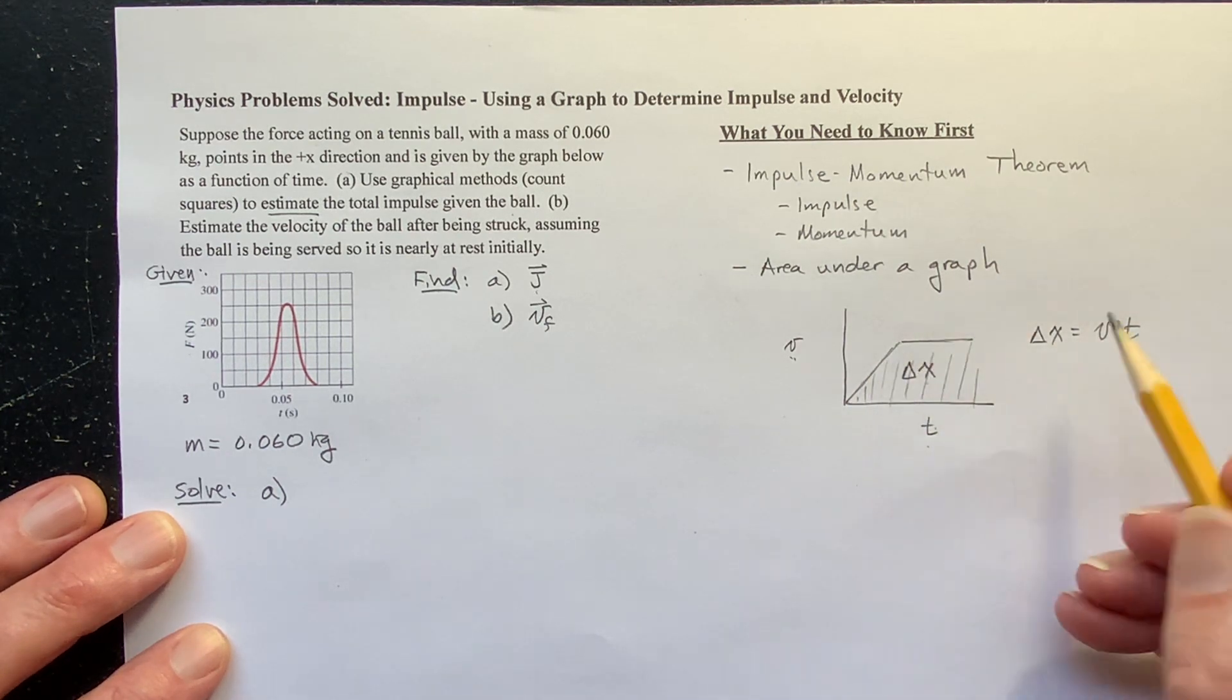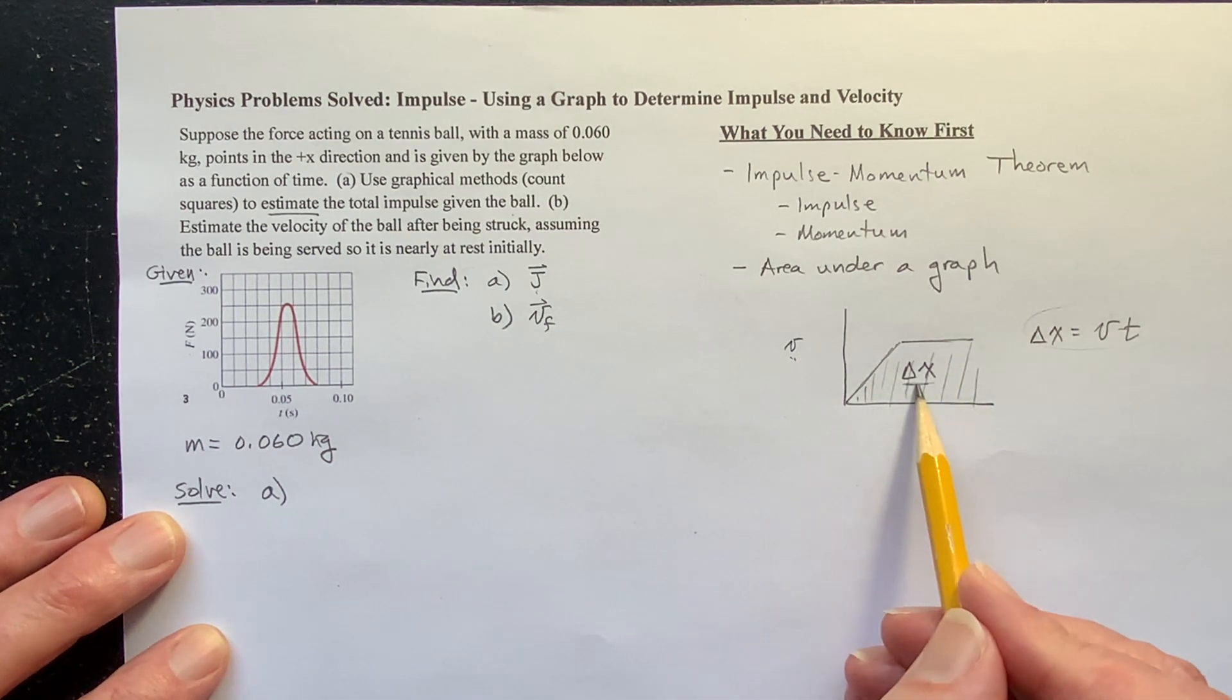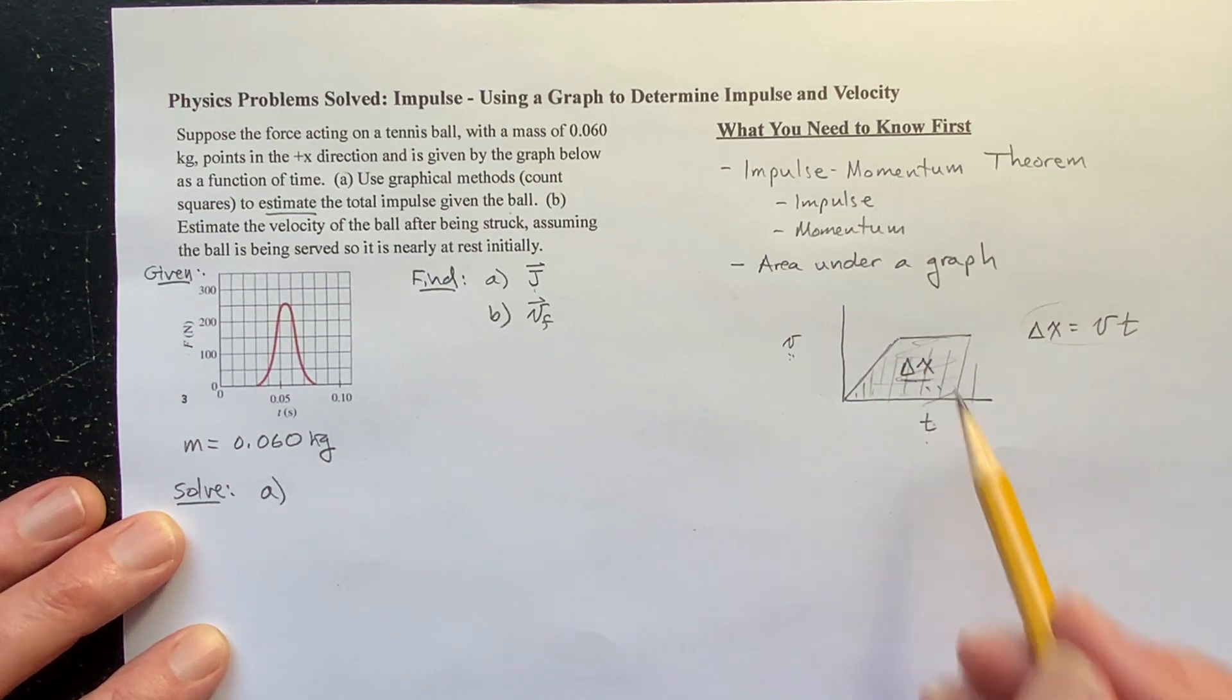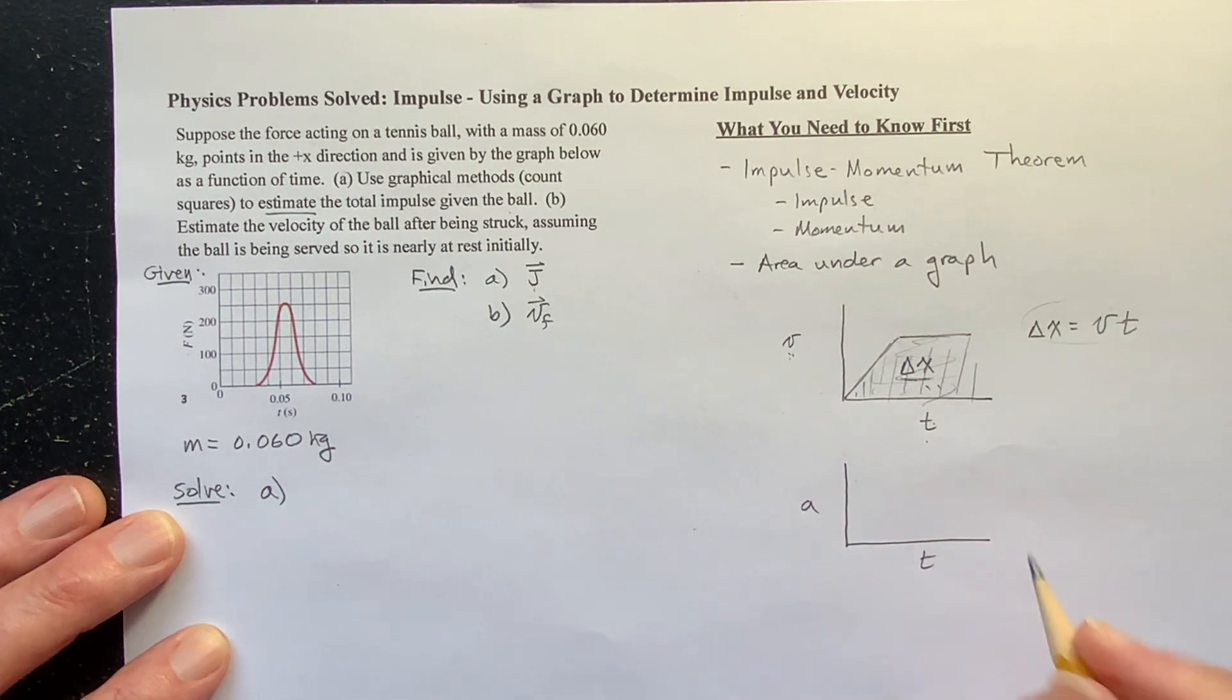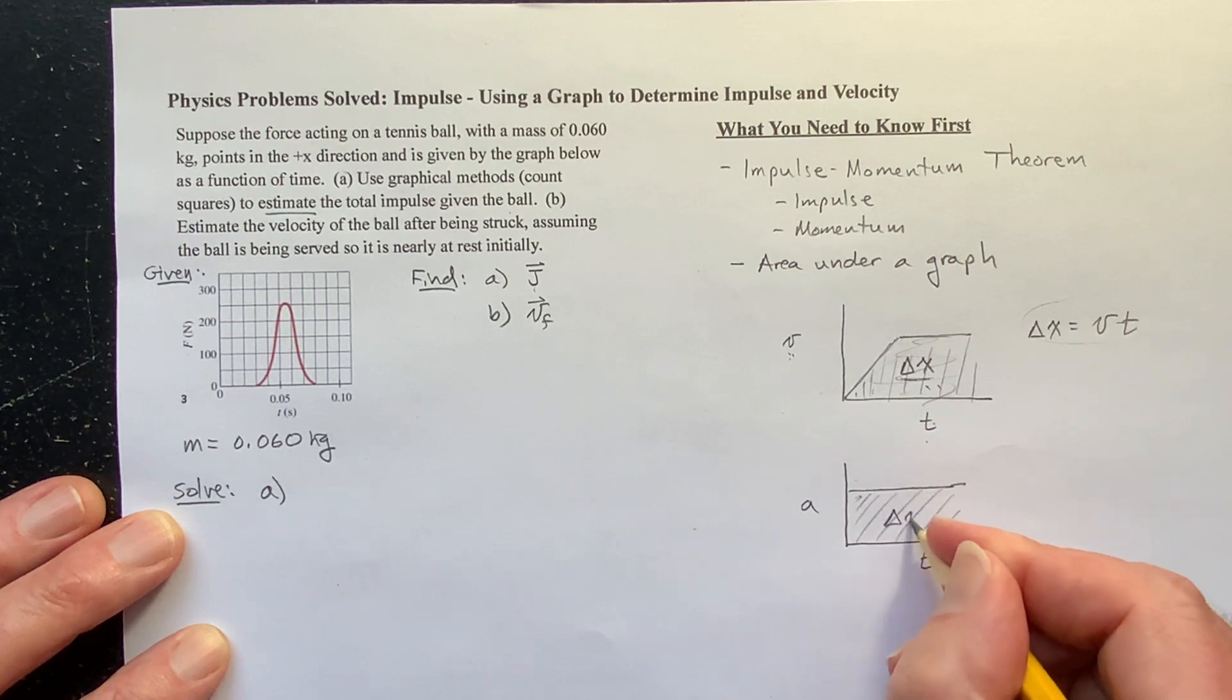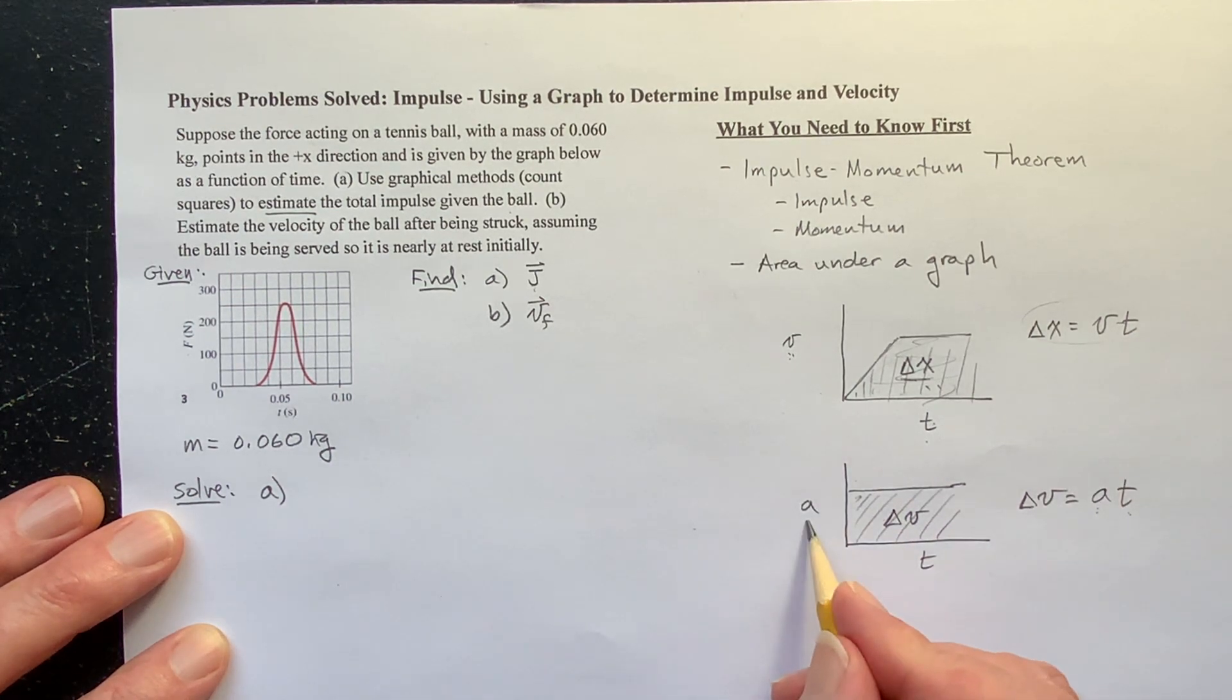But what I am saying is this: this quantity, delta x, is the product of velocity times time. And so when you plot velocity as a function of time, the area underneath it is that. And we did the same thing with acceleration and time. Remember if you had a constant acceleration problem, the area underneath this graph is a change in velocity. Change in velocity is equal to acceleration times time.